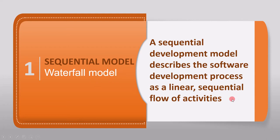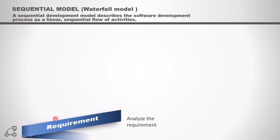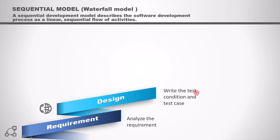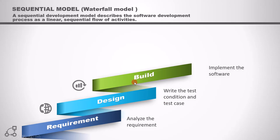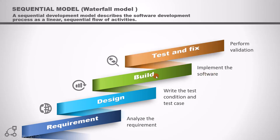A sequential development model describes the software development process as a linear, sequential flow of activities. The first activity is the requirement activity, where we analyze the requirements. Then we go into the design phase, where we write test conditions and test cases. After that, we start building the software, which is the implementation stage of the process.